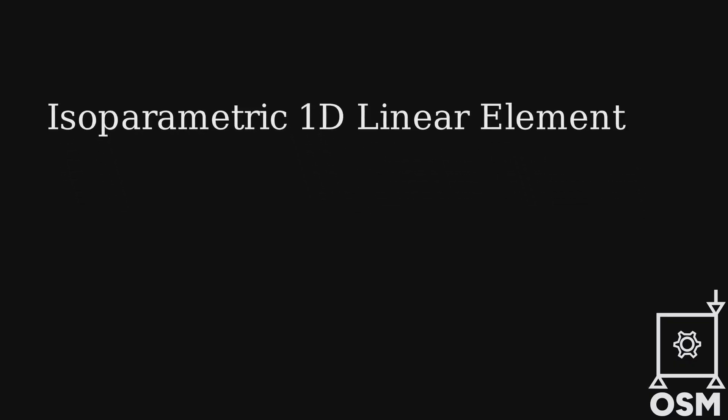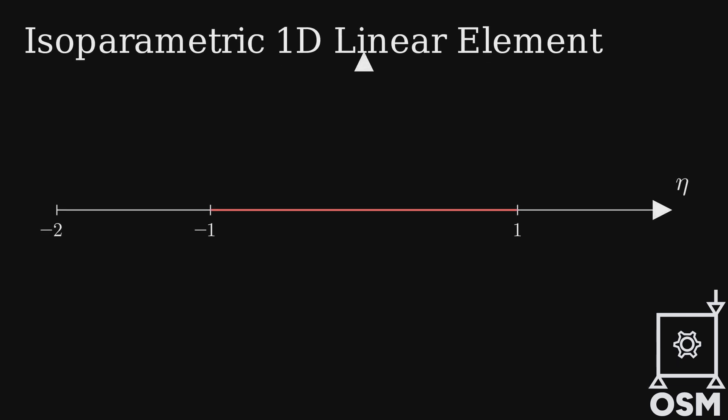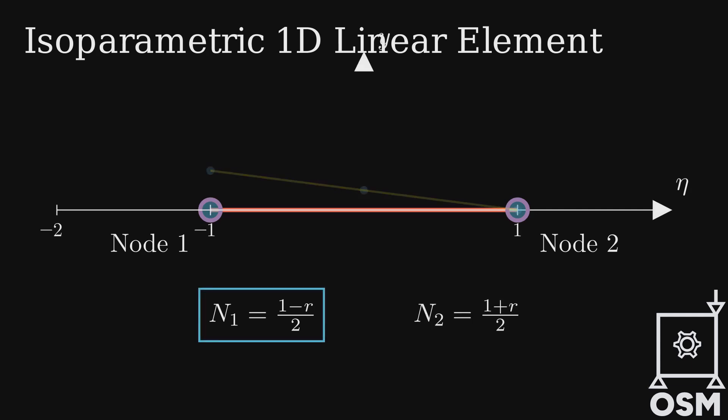Isoparametric linear finite element has two nodes, positioned at minus one and plus one in its internal coordinate system. The shape functions associated with these nodes are constructed such that each function equals one at its corresponding node and varies linearly across the element, reaching zero at the opposite node.